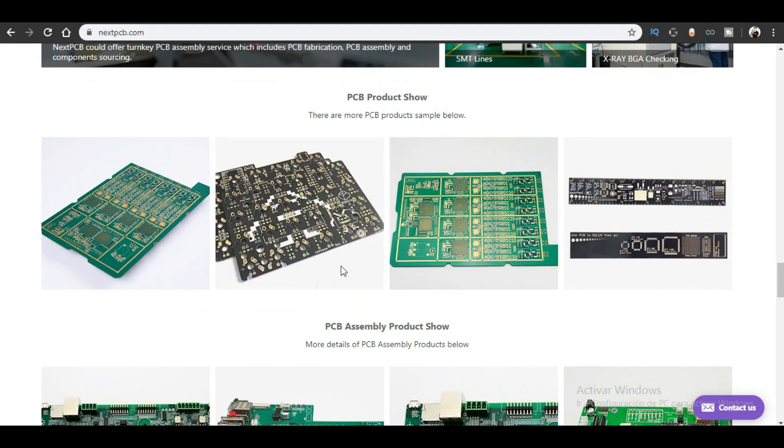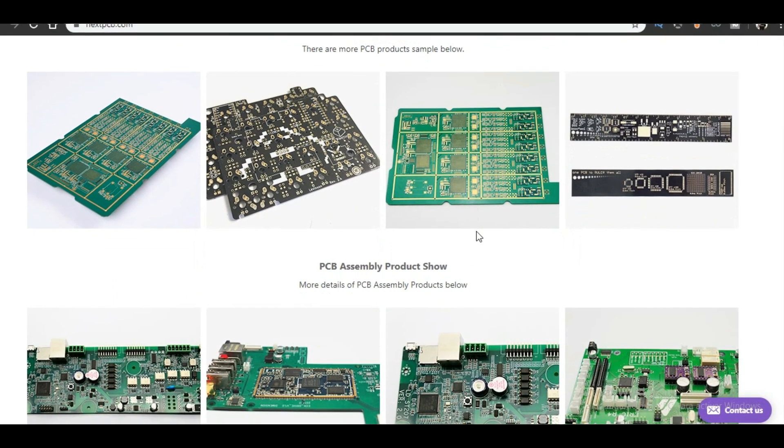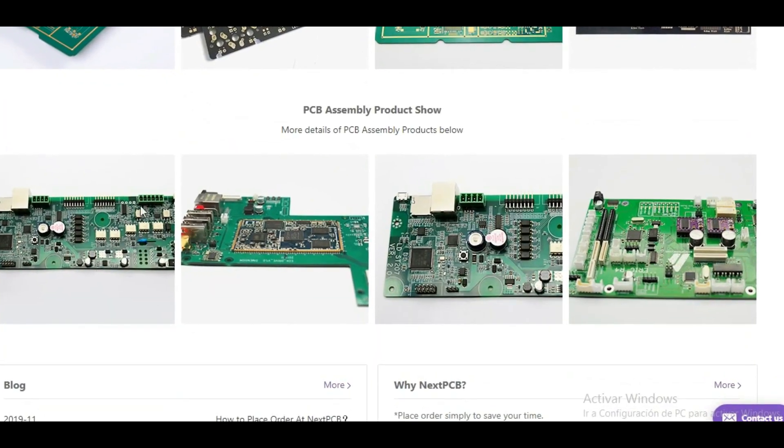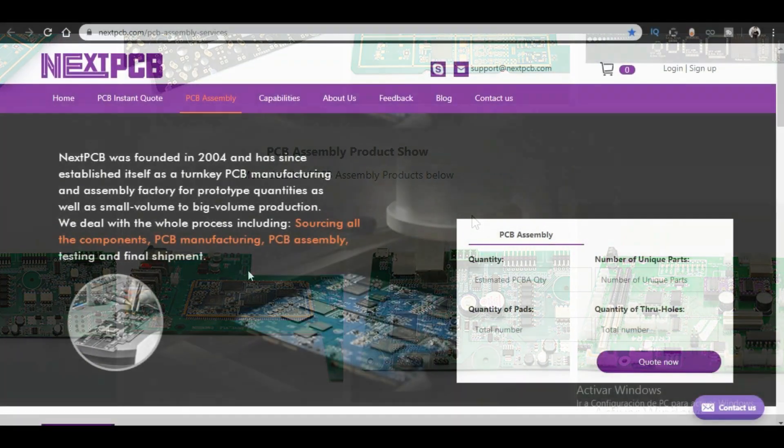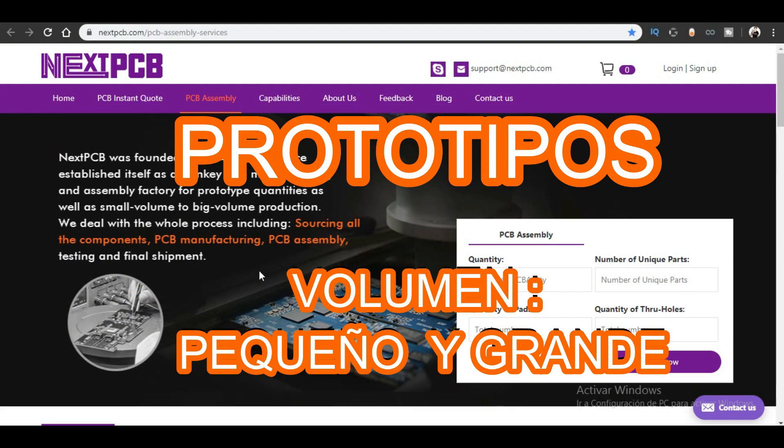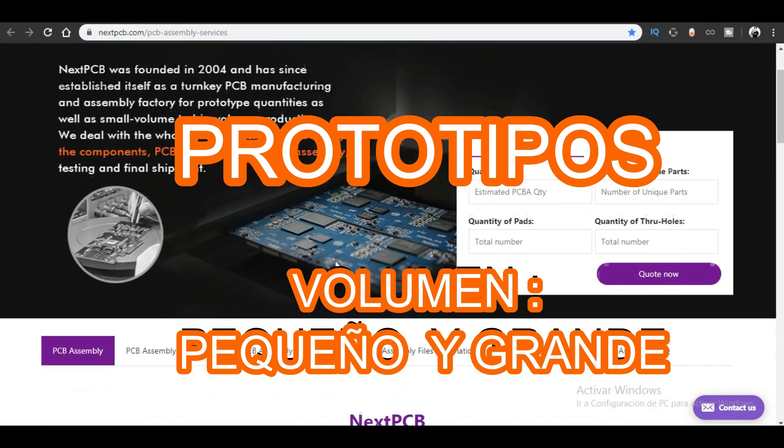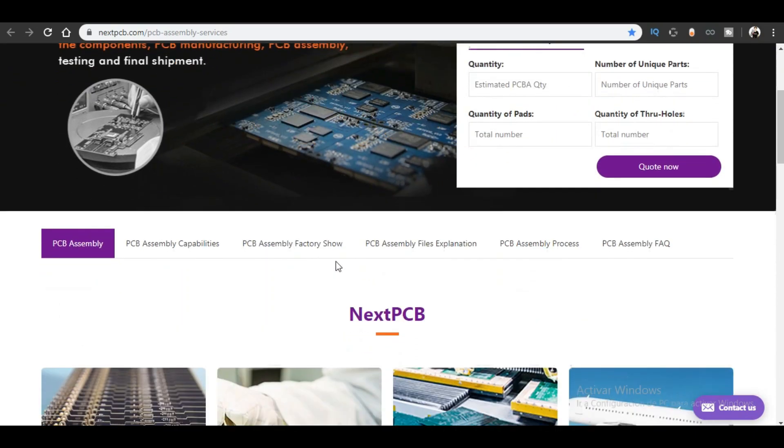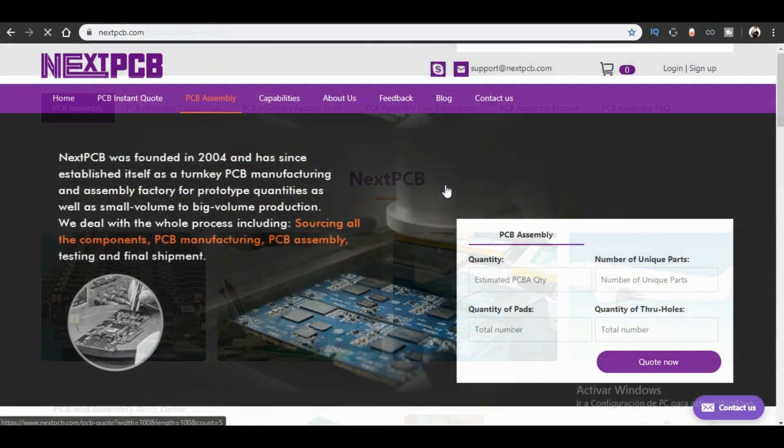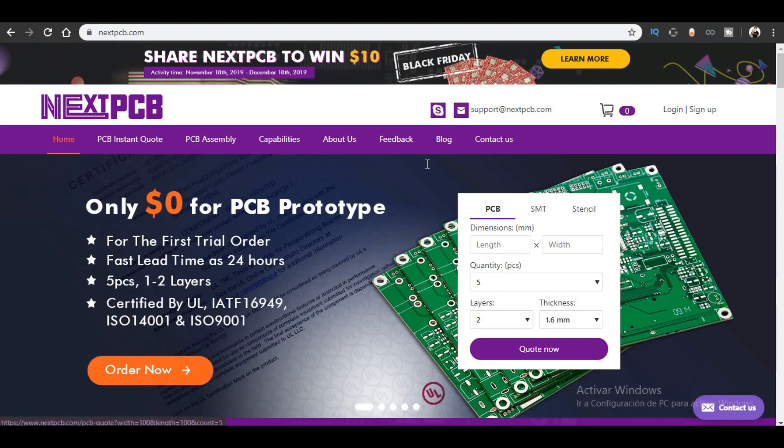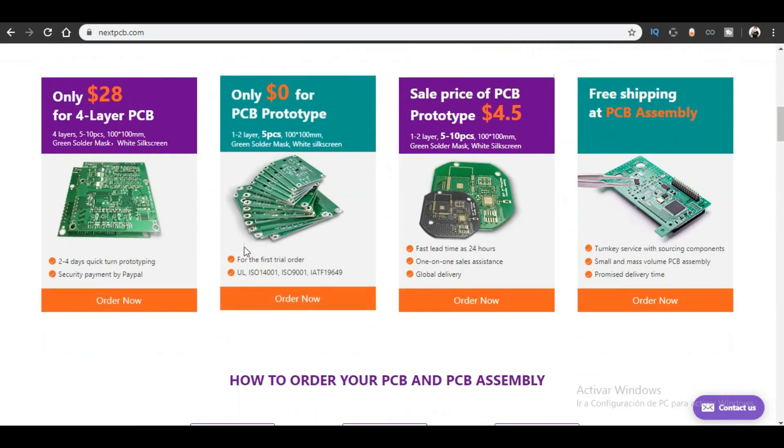Los envíos ellos lo hacen en DHL, que es una de las mejores empresas que te entregan rápido. NextPCB tiene tres grandes fábricas donde hacen los prototipos de producción en masa y ensamblaje de PCBs. Si quieren realizar prototipos a gran escala, NextPCB les hace desde pequeñas hasta grandes cantidades de producción. Yo he pedido mis PCBs y ahorita les voy a enseñar cómo es que ya me llegaron.